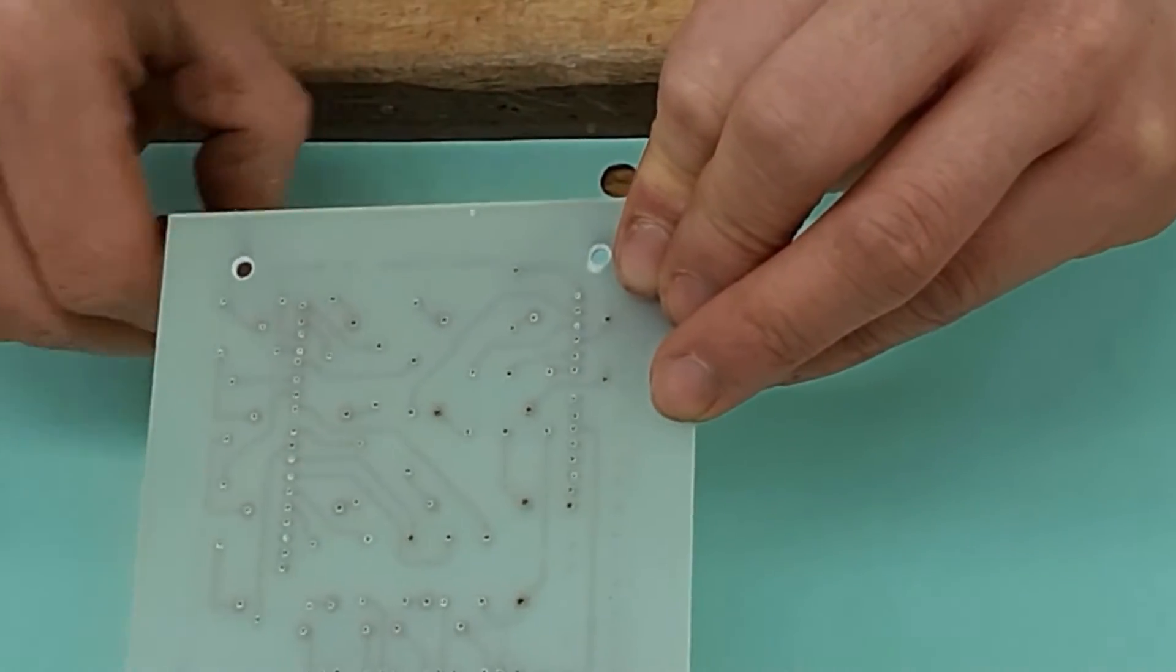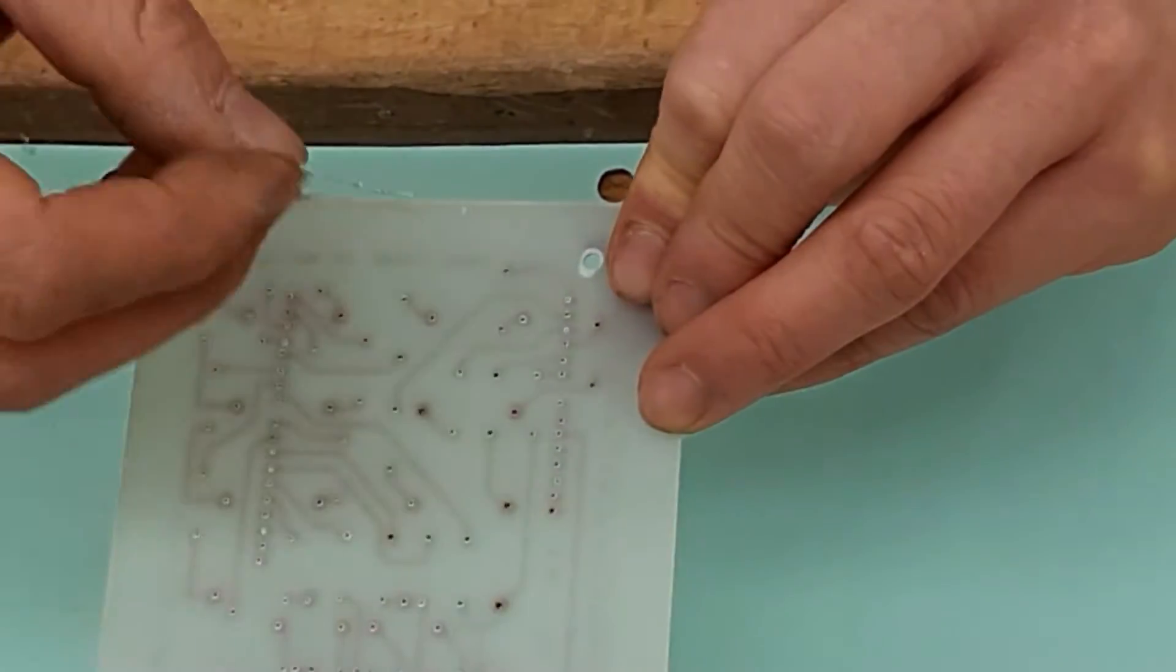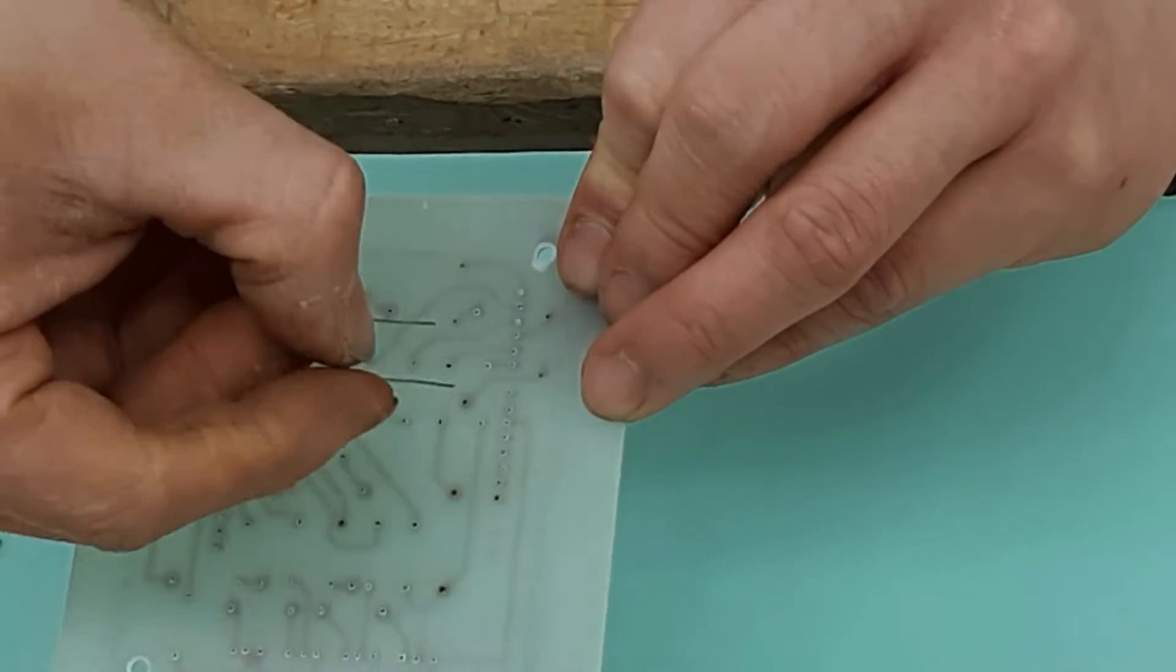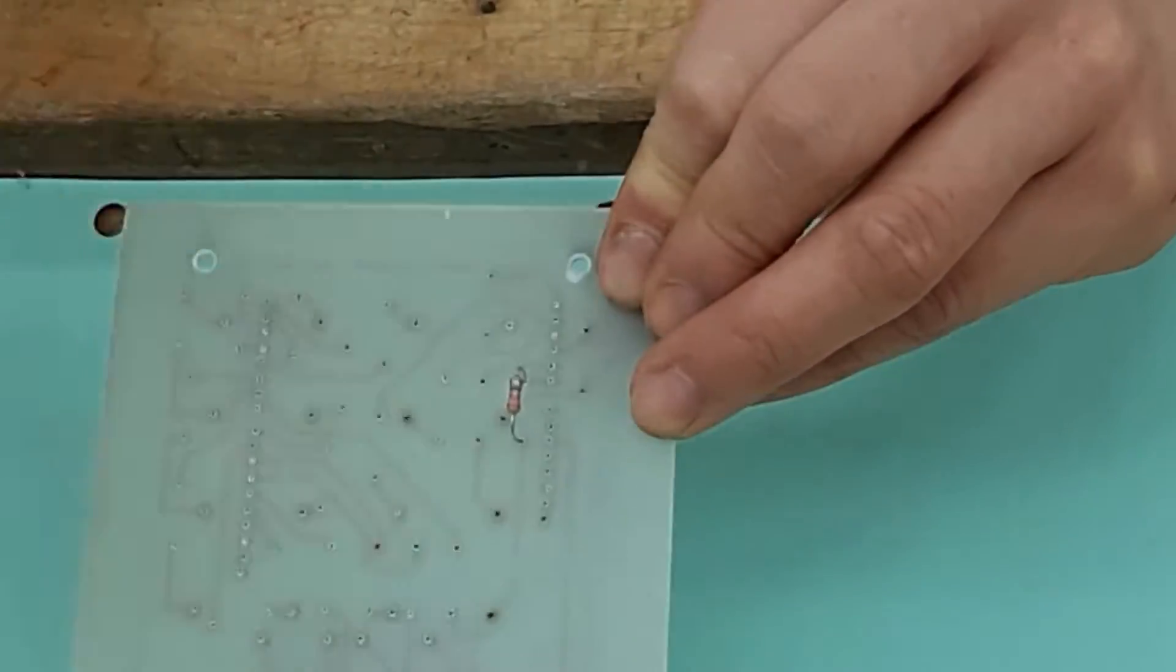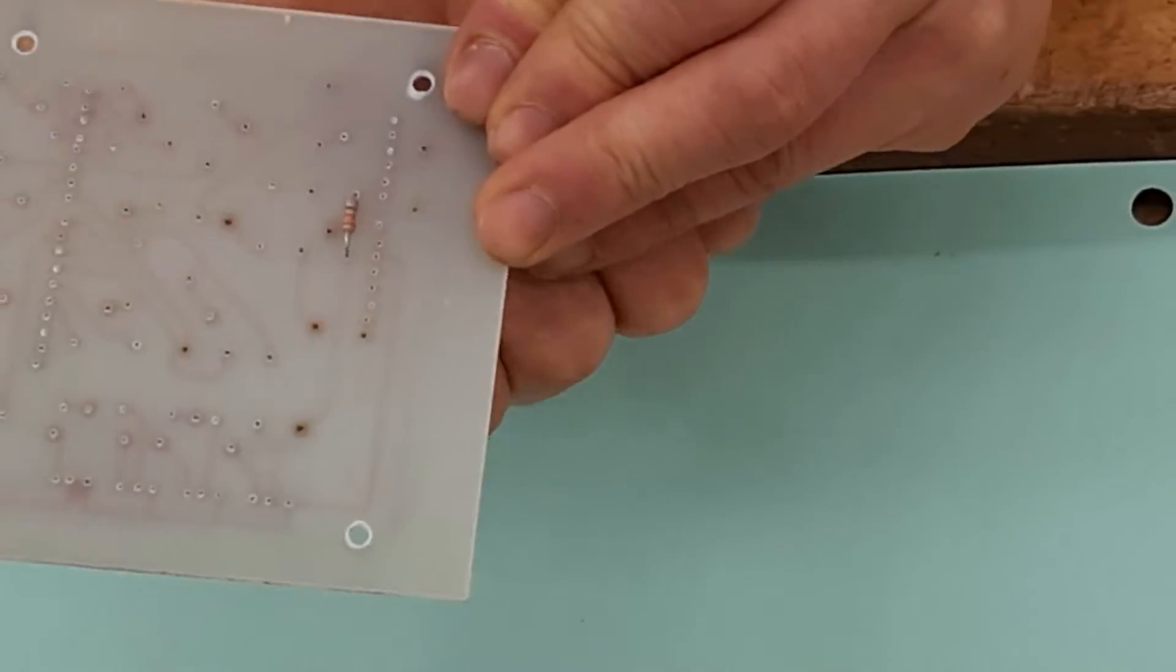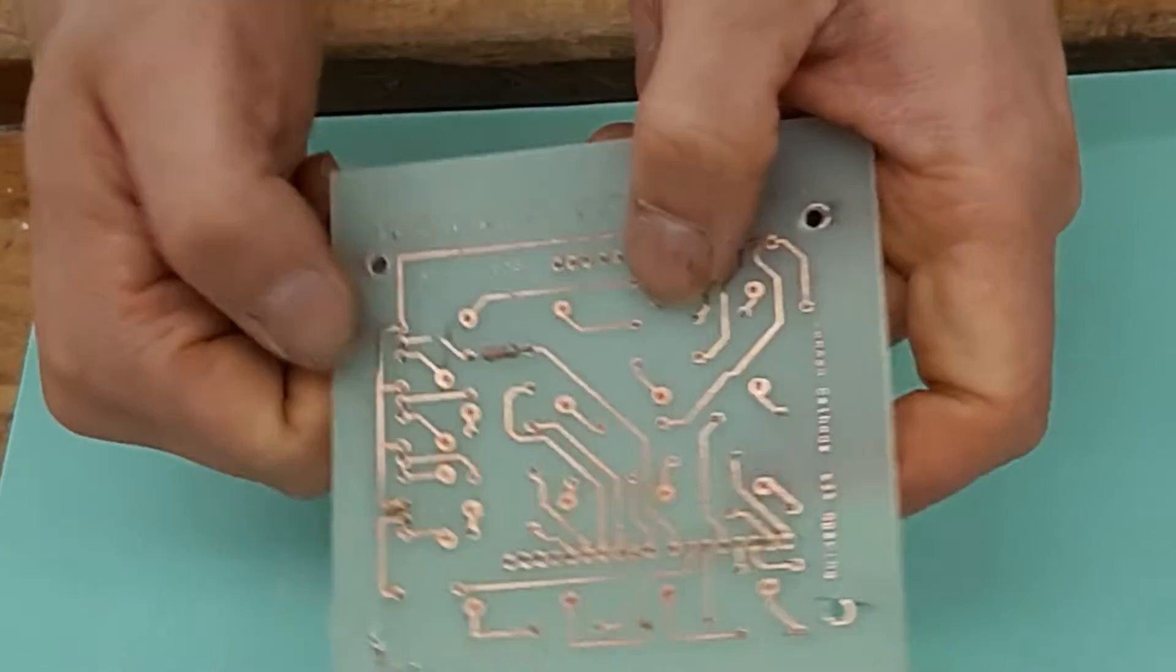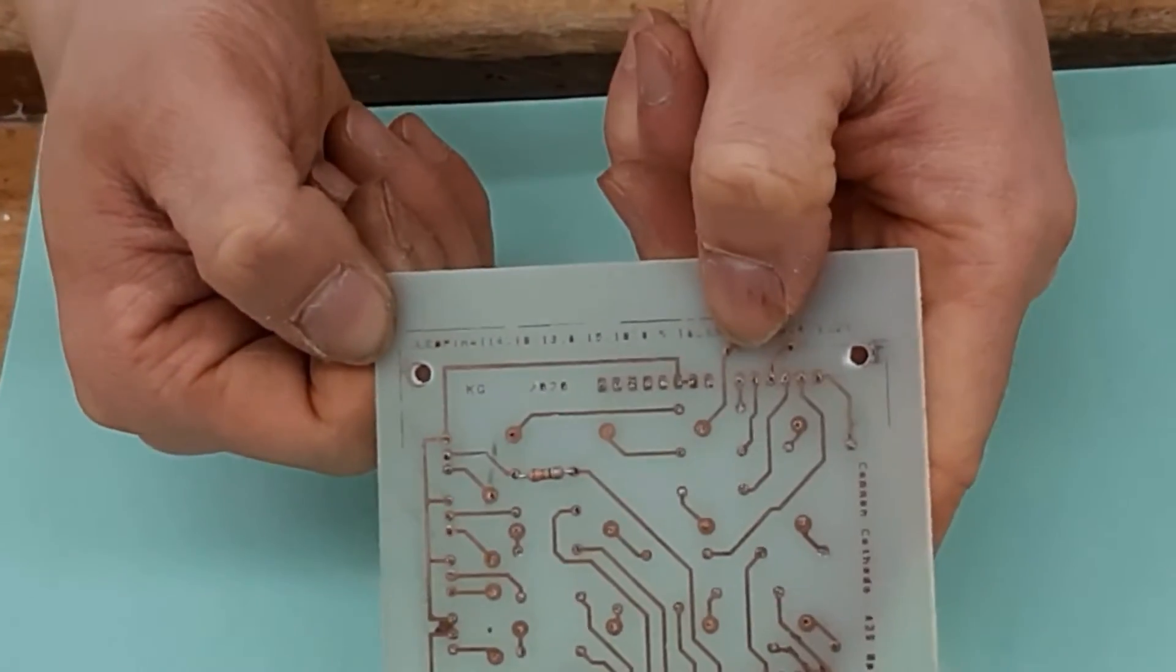When you're sticking electronic components in, you want to stick them going into the non-copper side, like this. If you're putting them in this way, you're soldering it wrong.